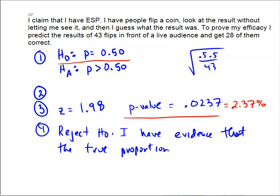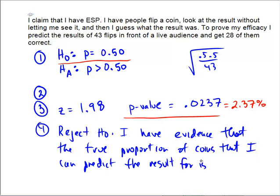is above the claimed 50%. So that means that either the coin was biased in some way, or I'm cheating, or I actually do have ESP. This is how we use a hypothesis test to try to establish that I actually have extrasensory perception.